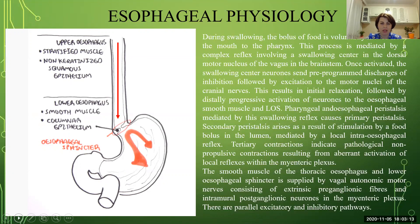Once activated, the swallowing center sends a pre-programmed discharge of inhibition followed by excitation to the motor nuclei of the cranial nerves, resulting in initiation and relaxation followed by distally progressive activation of neurons to the esophageal smooth muscles and lower esophageal sphincter. Pharyngeal and esophageal peristalsis mediated by the swallowing reflex causes primary peristalsis. Secondary peristalsis arises from stimulation by food boluses in the lumen, mediated by a local intra-esophageal reflex. Tertiary contractions indicate pathological non-propulsive contractions from aberrant activation of local reflexes. The smooth muscles of the thoracic esophagus and lower esophageal sphincter are supplied by vagal autonomic motor nerves, with excitatory and inhibitory pathways.